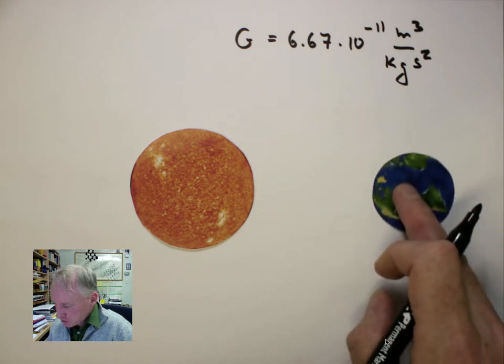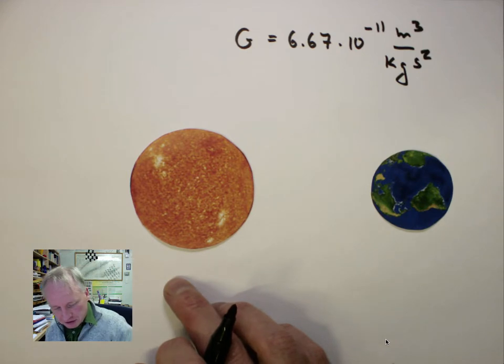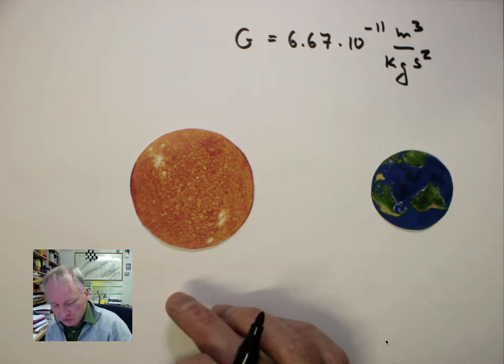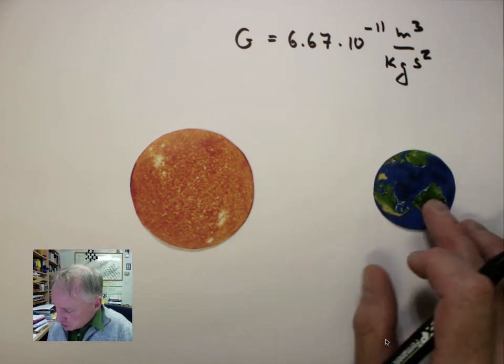The Sun, of course, is much larger than depicted here. We'll find it has a mass that is 3 times 10 to the 5 times larger than the mass of the Earth.